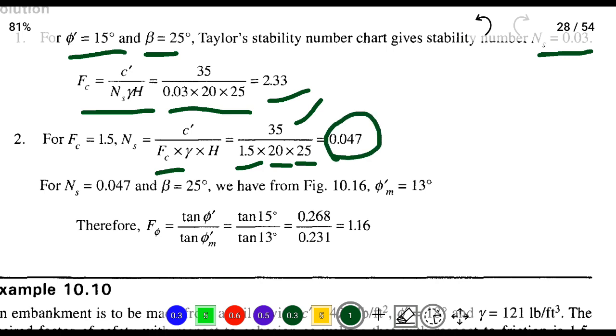For Ns = 0.047 and β = 25°, from the figure, the φm value is 13°.